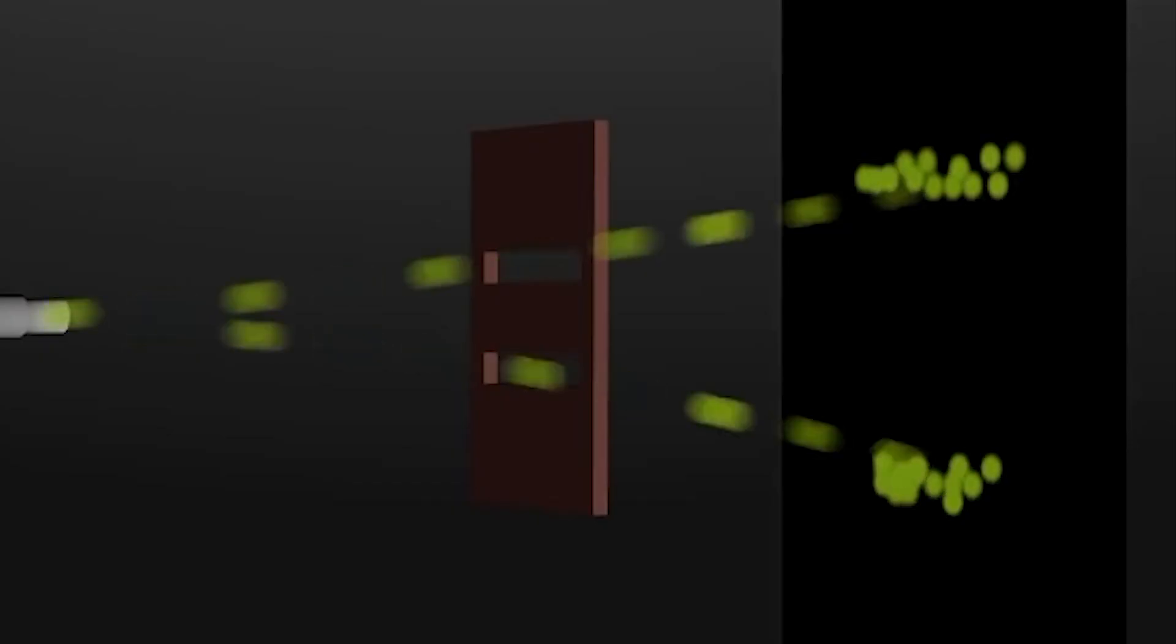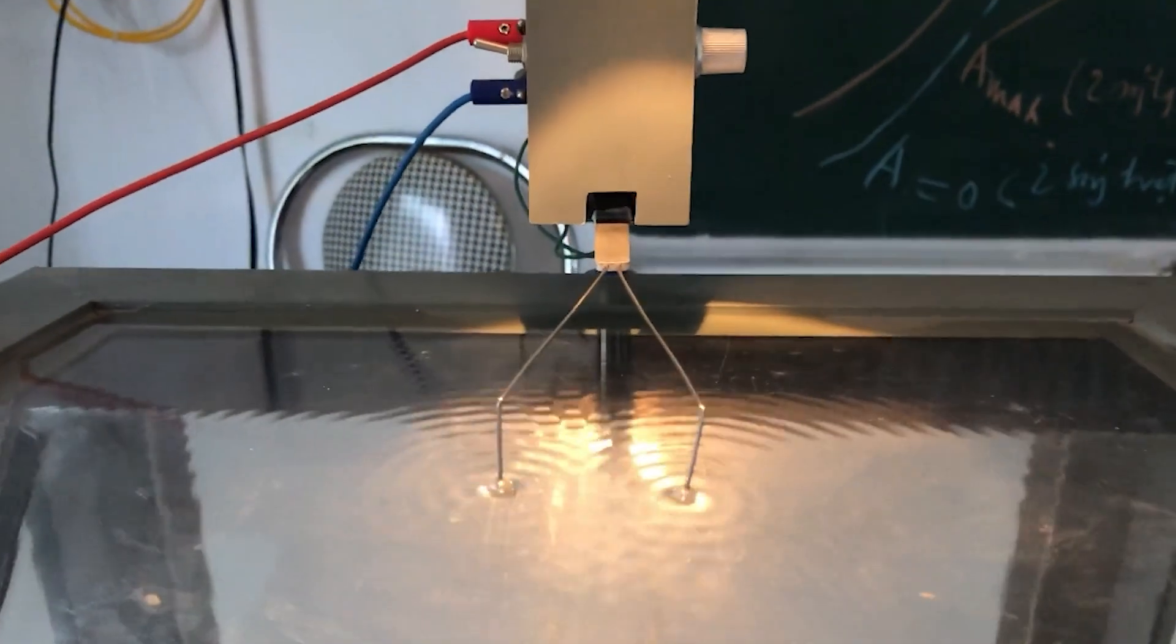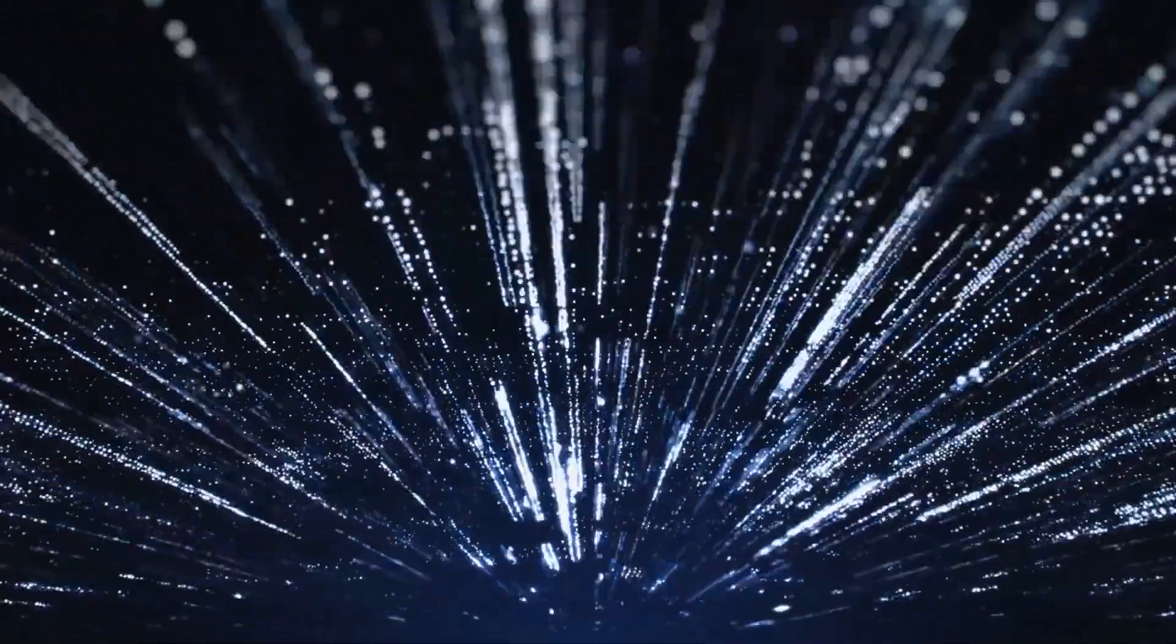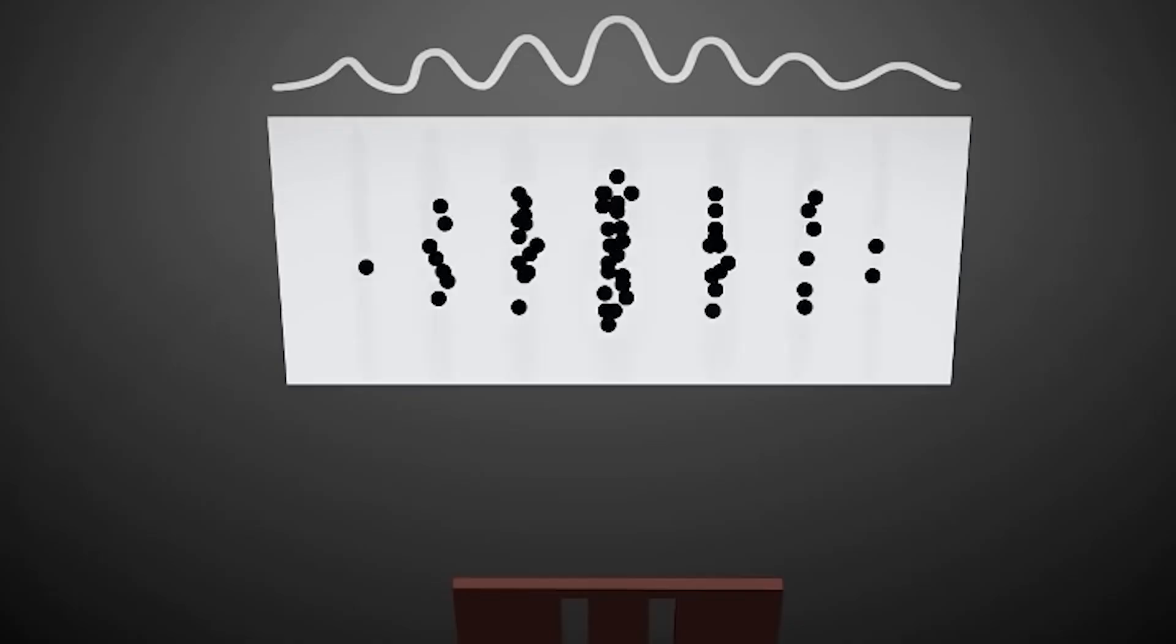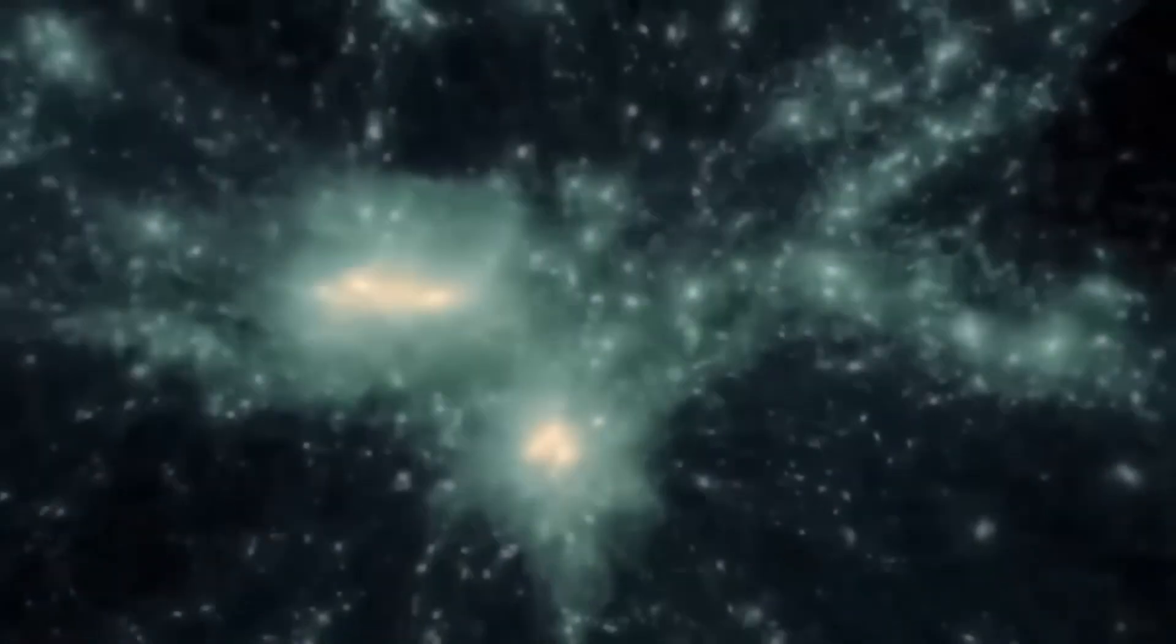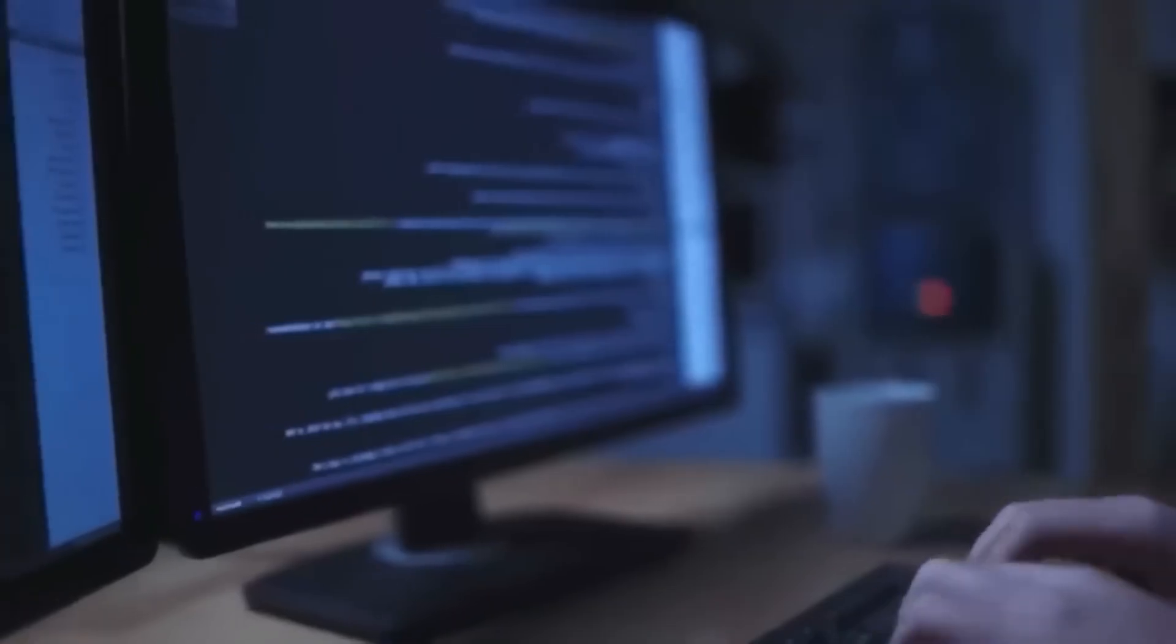Imagine you have an electron gun firing individual electrons toward a barrier with two narrow slits. Behind it is a screen that records where they land. If electrons were just tiny marbles, we would expect to see two bright lines lined up with the two slits. But the actual results stunned the world: an interference pattern appeared, exactly like the pattern created by water waves. Even more astonishing, when they slowed down the gun to fire electrons one at a time, the interference pattern still emerged. It was as if each electron spread out like a wave, passed through both slits at the same time, and then interfered with itself.